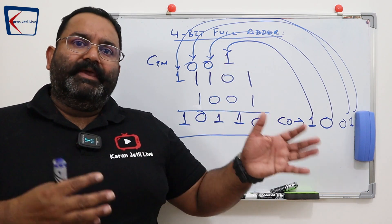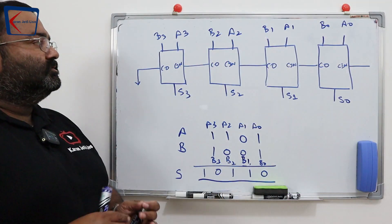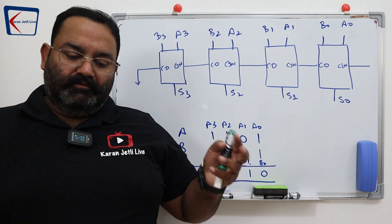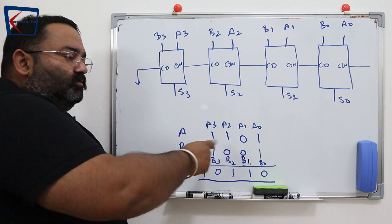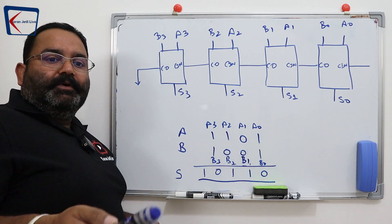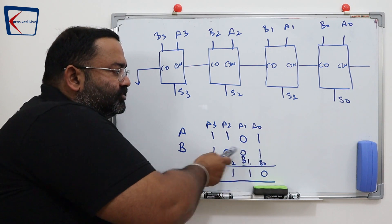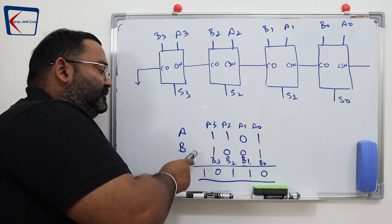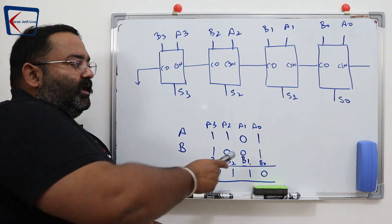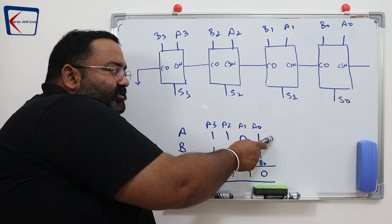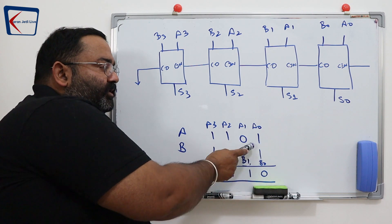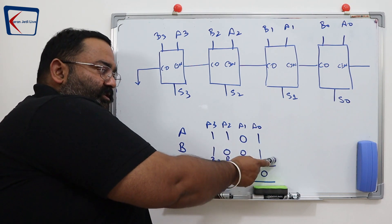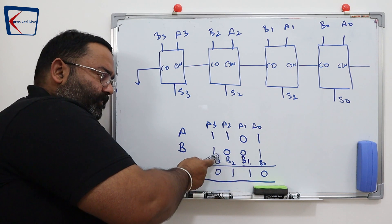Now let us make that circuit. This is the block diagram for the 4-bit full adder. In the previous part of the video we added those two numbers. Let us assume one number is A and another is B. This is bit 0 of number A: bit 0, bit 1, bit 2, bit 3. And similarly this is B0, B1, B2, B3.